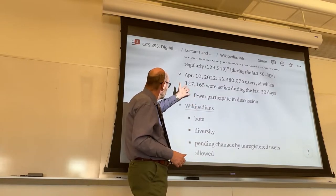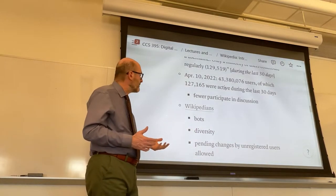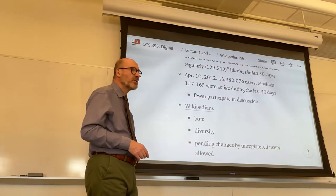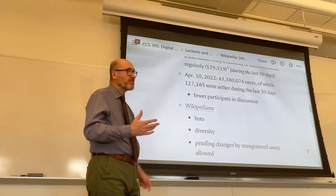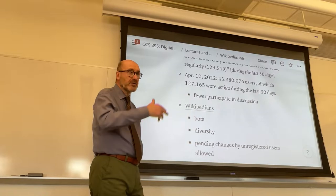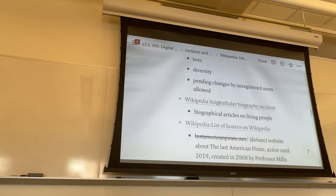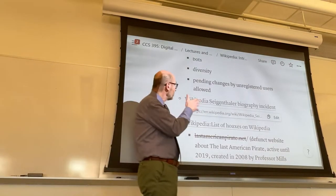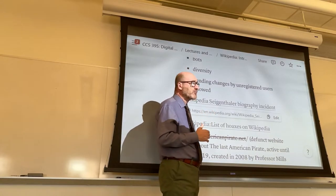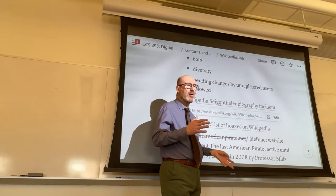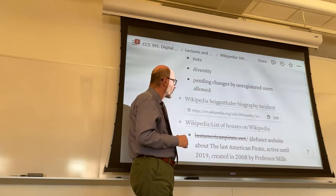What you can gather from these low numbers of active users is that the community of Wikipedians — of active Wikipedia editors and contributors — is not very diverse, both in terms of ethnic and racial composition and also in terms of gender. There is a large majority of white males who contribute to Wikipedia articles and are active in the community. Nowadays a lot of articles allow even someone who is not registered to try and make changes, but those changes will remain pending until they're reviewed and approved by an editor or moderator.